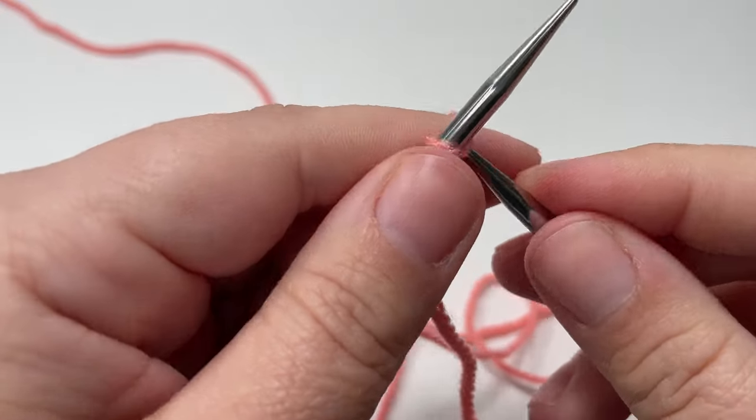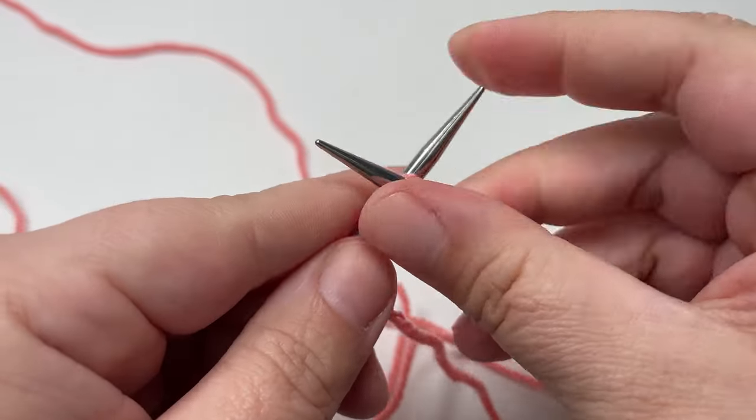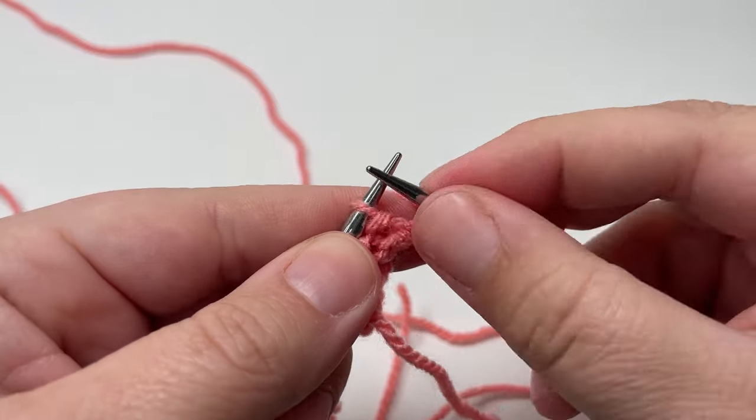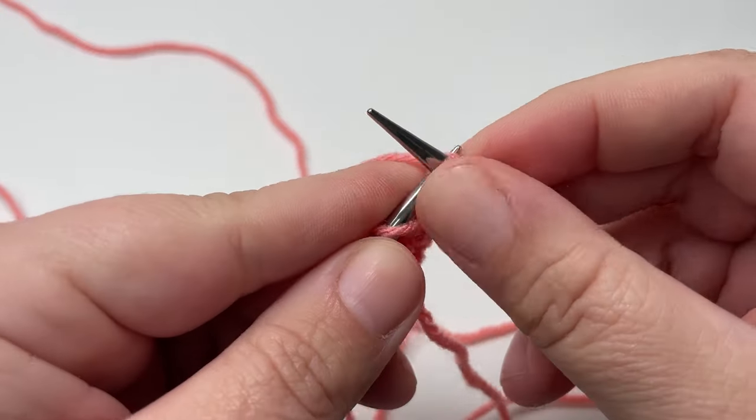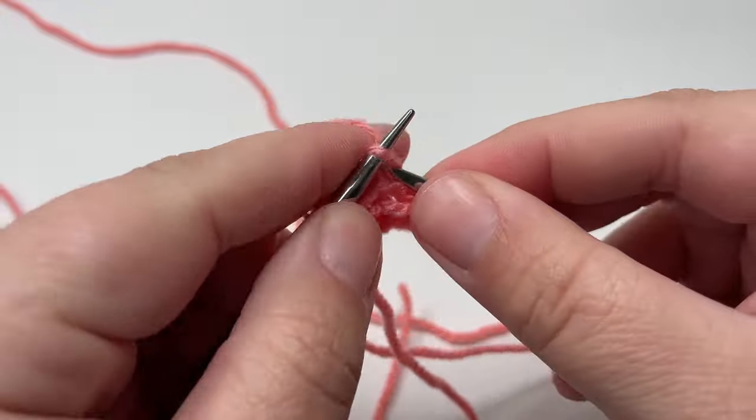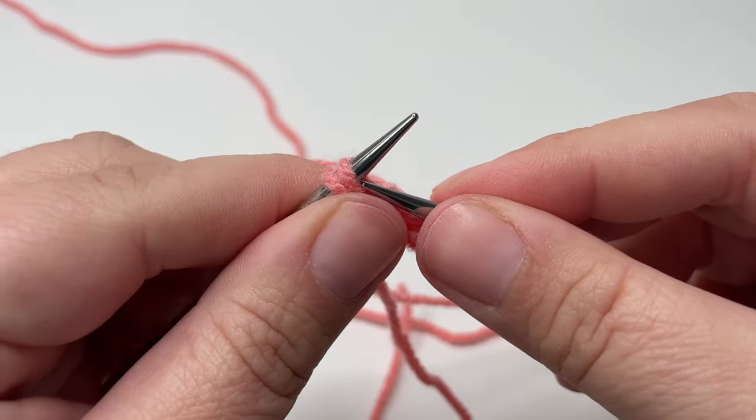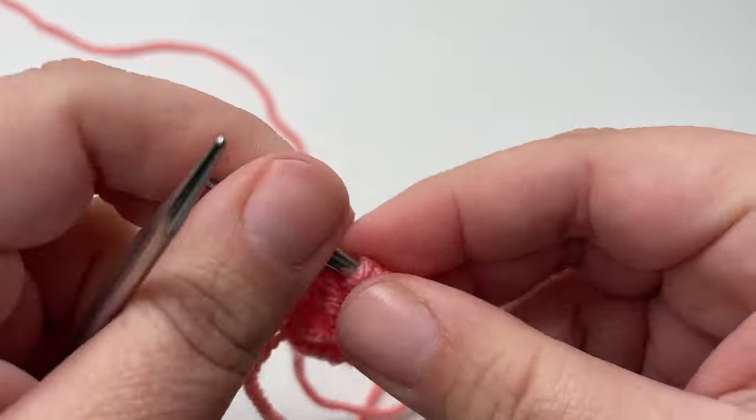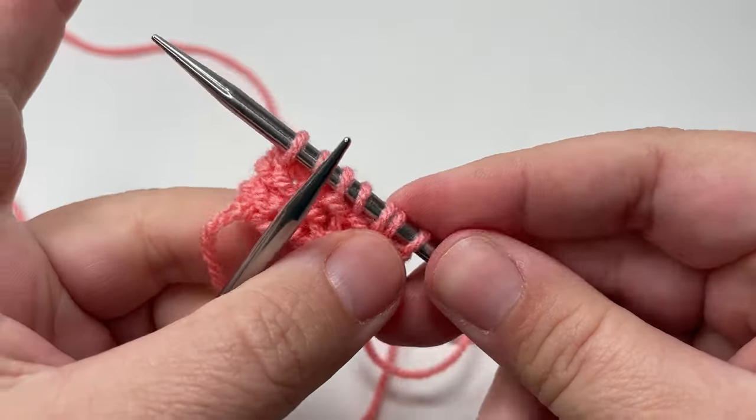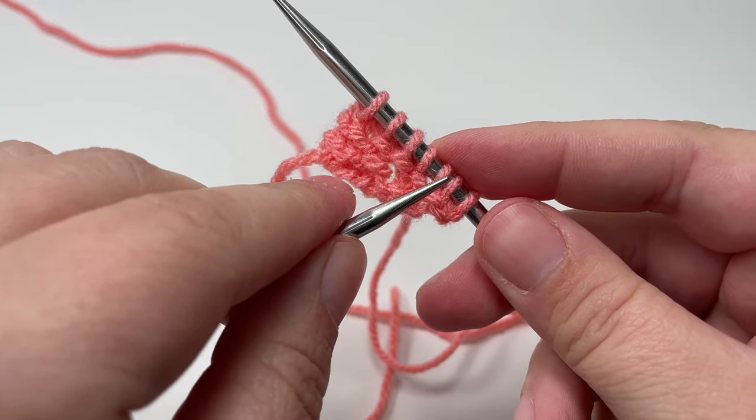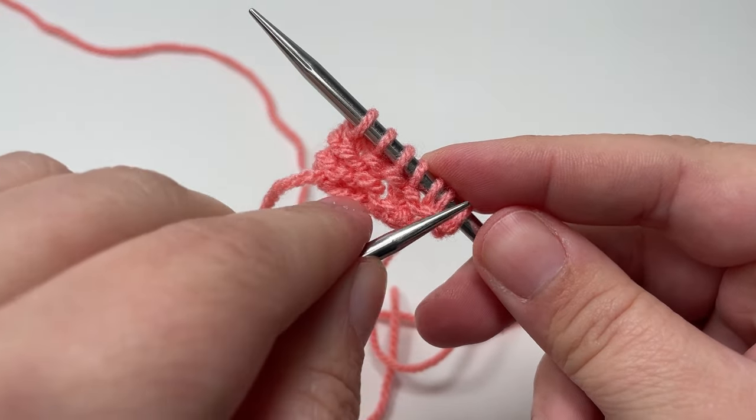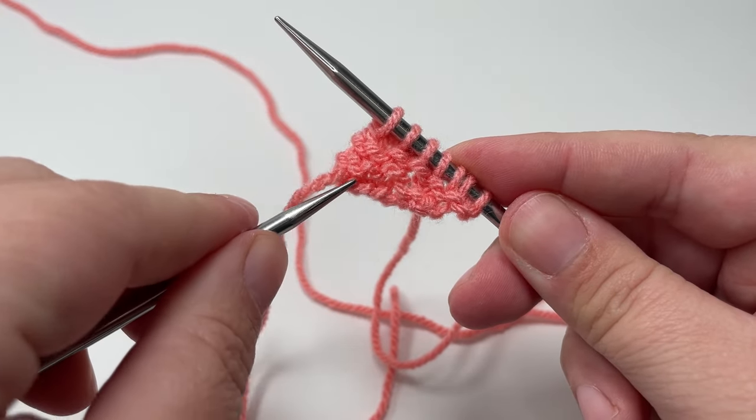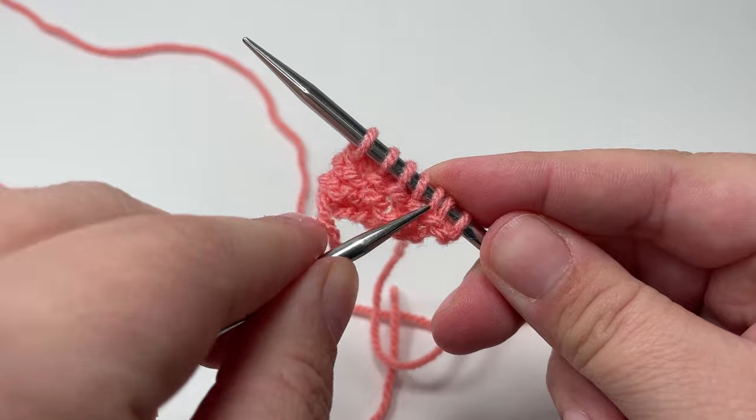Row two, you want to knit the first two stitches. Work a yarn over increase, knit until the last two stitches and then knit those two stitches together through the back loops. And on this row we have increased one and decreased one so we should end up with the same amount of stitches. And already in this really tiny piece of knitting, you can see that it's starting to form that asymmetrical shape.